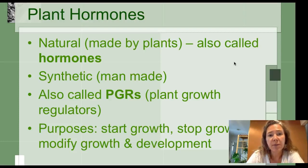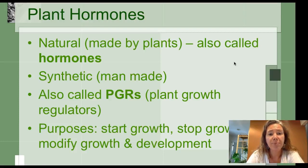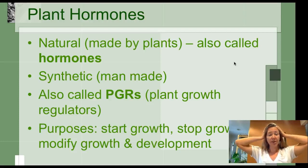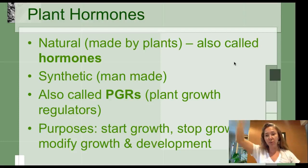Unlike nutrients that are coming from the outside, plant hormones, phytohormones or PGRs, plant growth regulators, can be made by plants themselves in different situations and in different parts of the plant. For example, auxin is always present in the very tip, the growing meristem of plants, which is why we can remove it by pinching back plants.